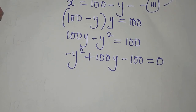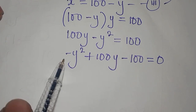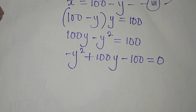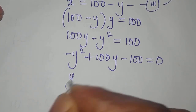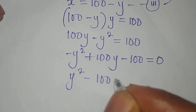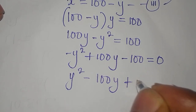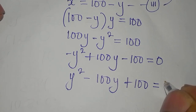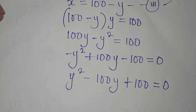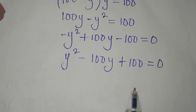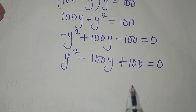We need to remove the negative, so we multiply all through by negative 1. That gives us y squared minus 100y plus 100, because we are multiplying everything by negative 1. We would not be able to solve this by factorization.